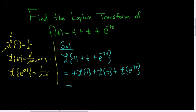Plus the Laplace of t plus the Laplace of e to the negative 7t. We know that the Laplace of 1 is equal to 1 over s. So this is 4 times 1 over s.